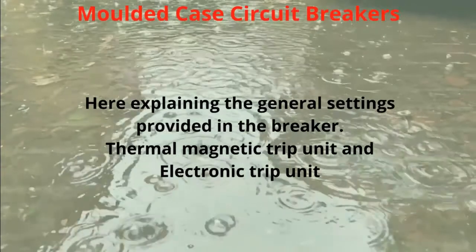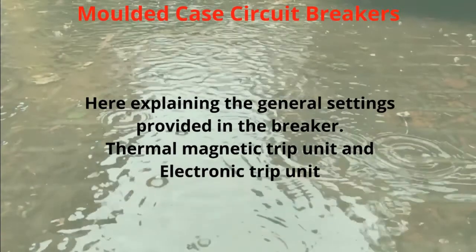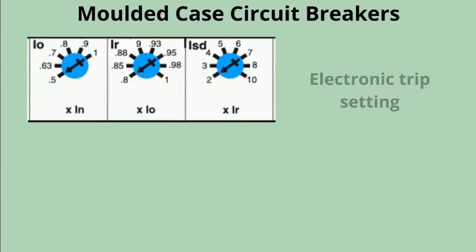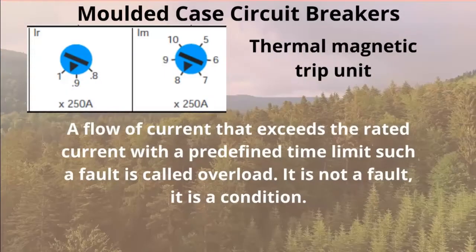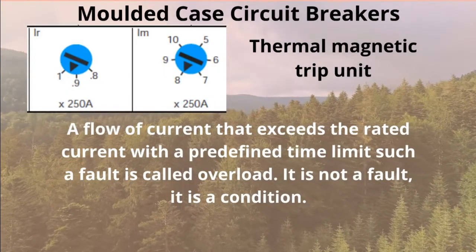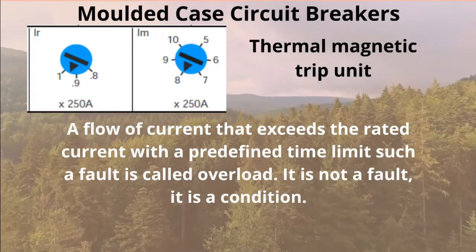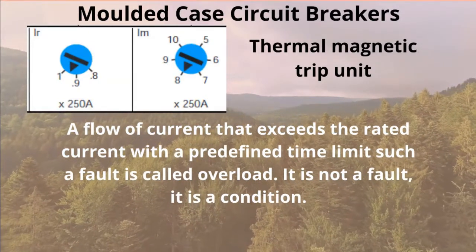Thermal magnetic trip unit and electronic trip unit. For the thermal magnetic trip unit: a flow of current that exceeds the rated current with a predefined time limit — such a condition is called overload. It is not a fault; it is a condition.